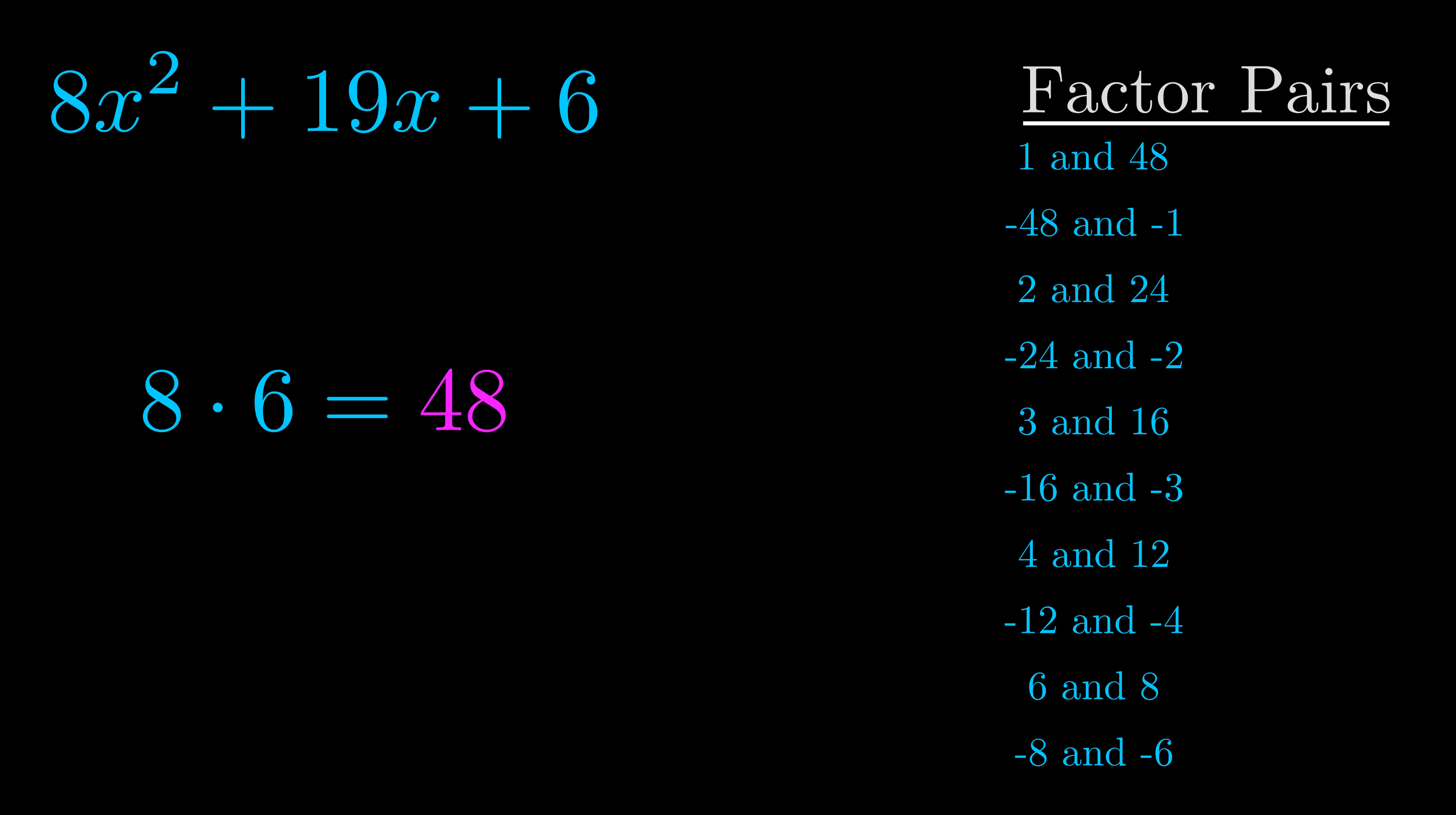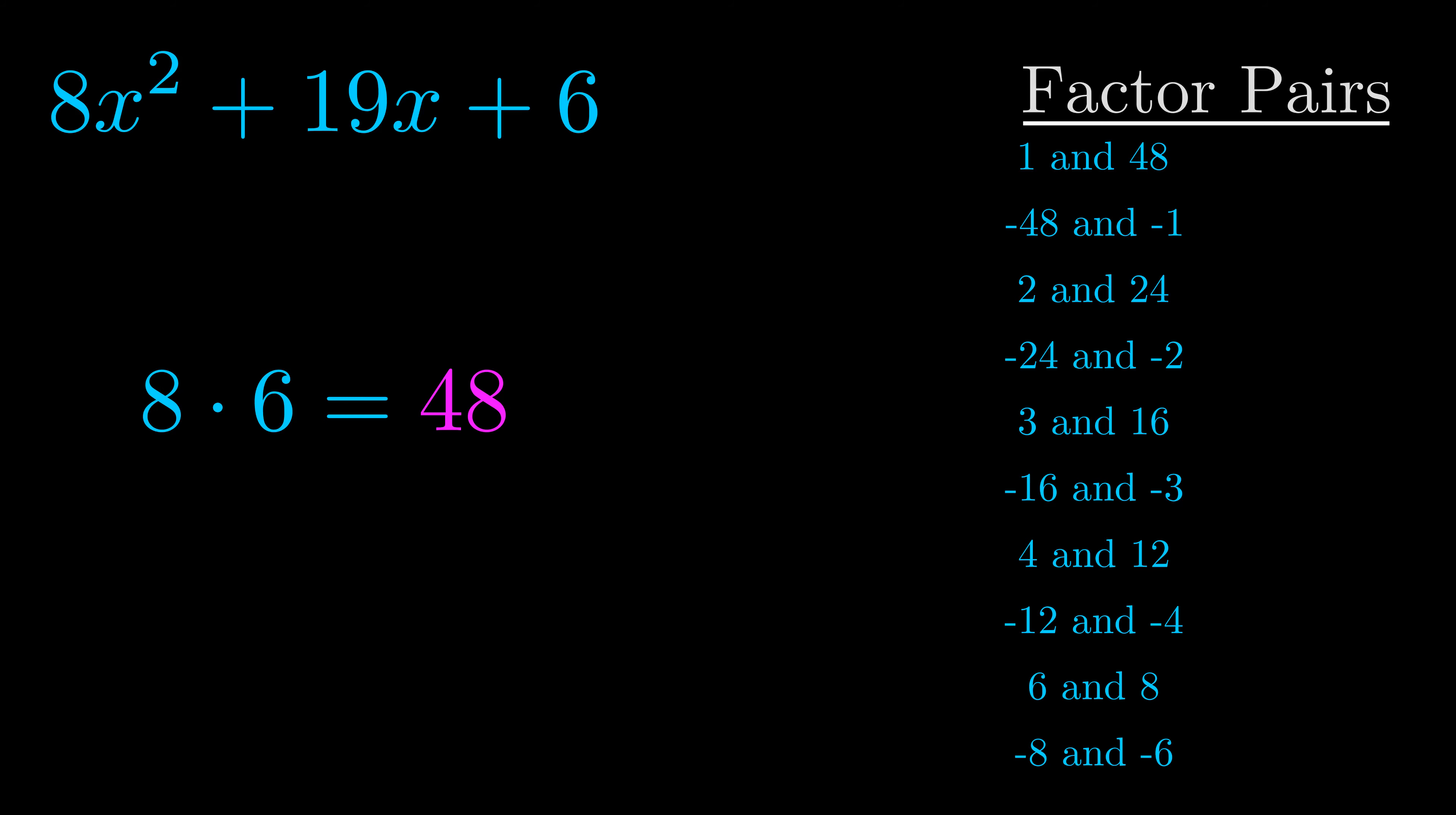Now once you have these factor pairs, the goal is to find which of these pairs adds to the b value. The b value is the coefficient on the x term. That's the middle term,